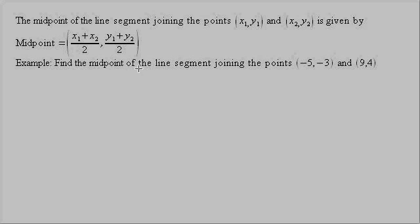For an example, find the midpoint of the line segment joining the points (-5, -3) and (9, 4). The midpoint: x₁ would be negative 5, y₁ would be negative 3, x₂ would be 9, and y₂ would be 4. So we plug these in.